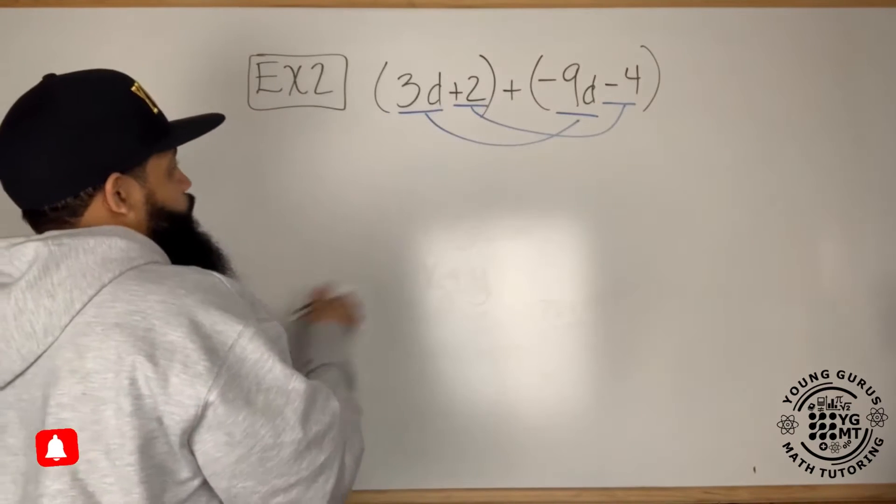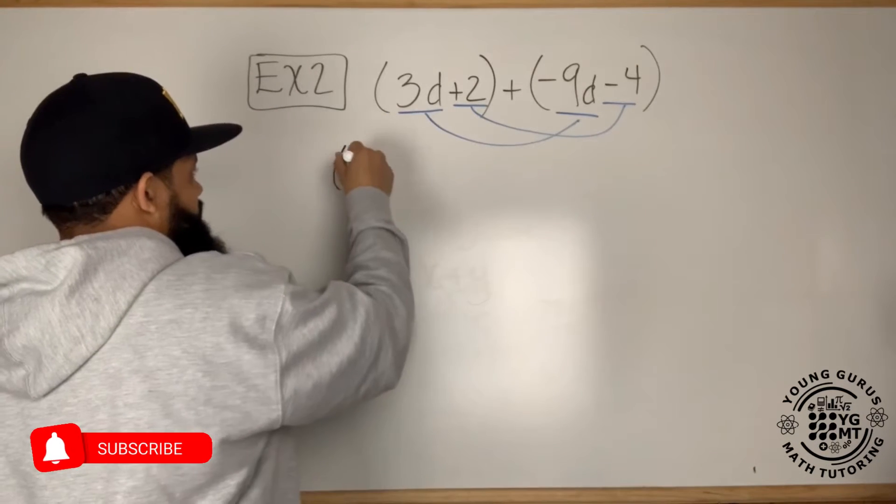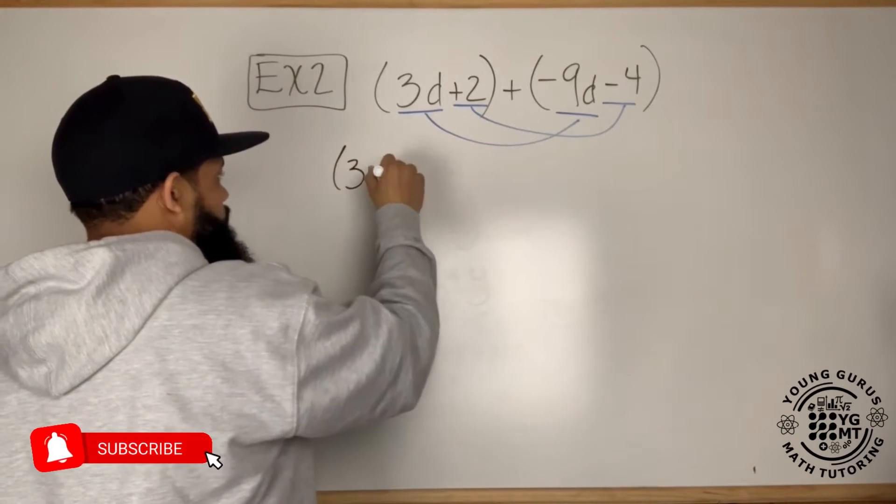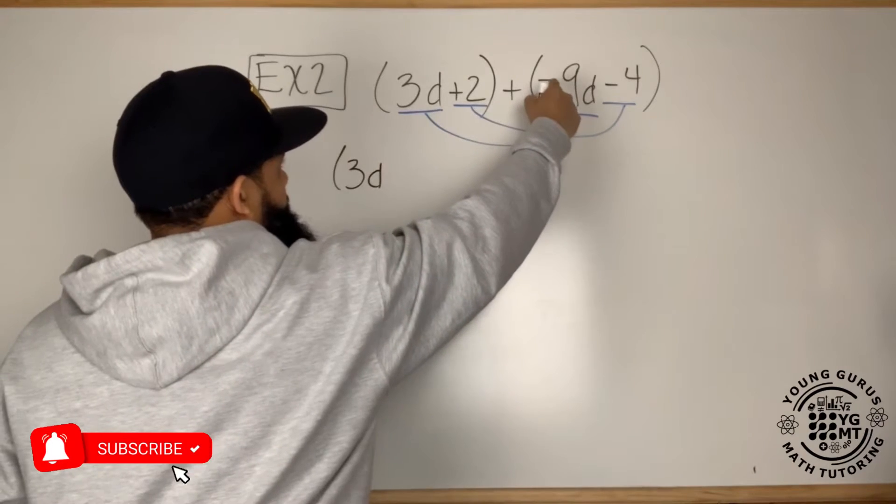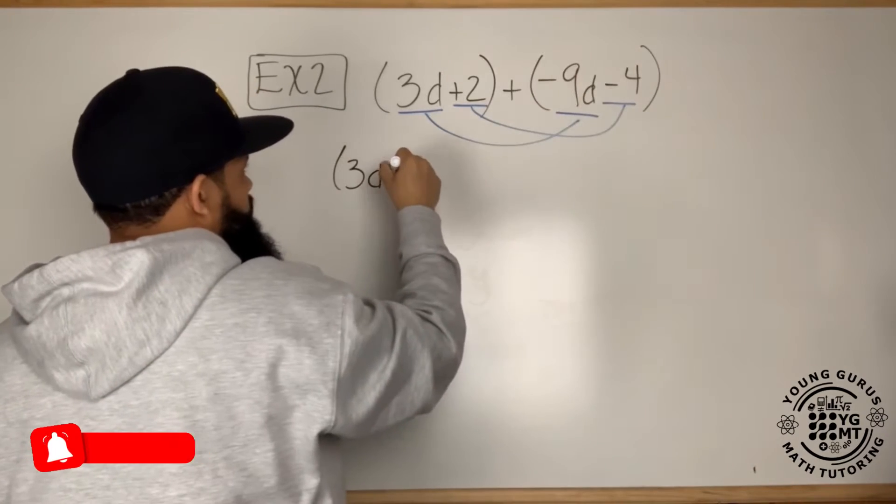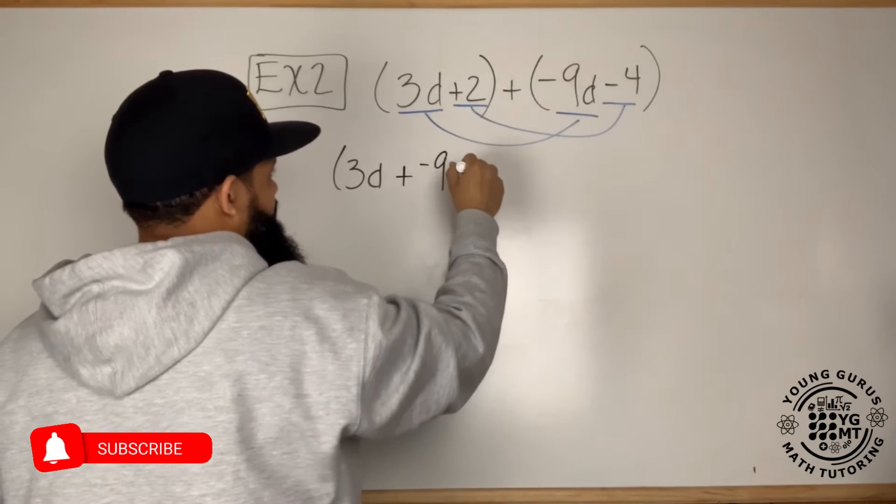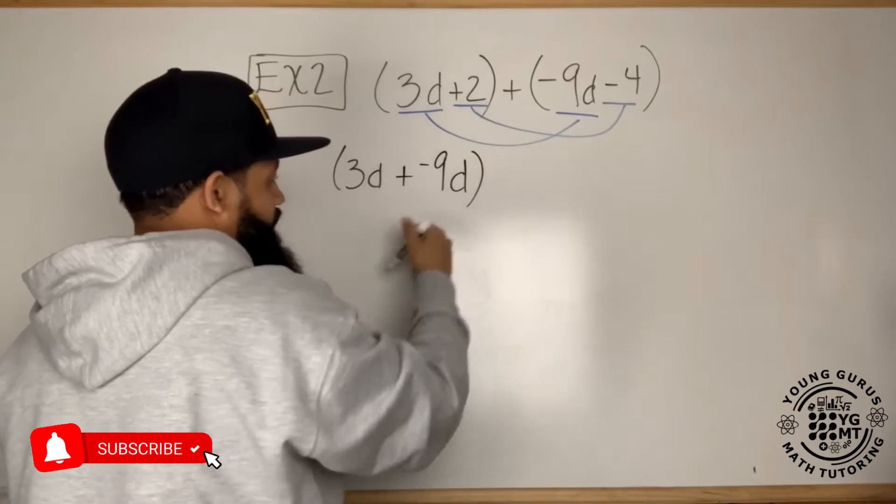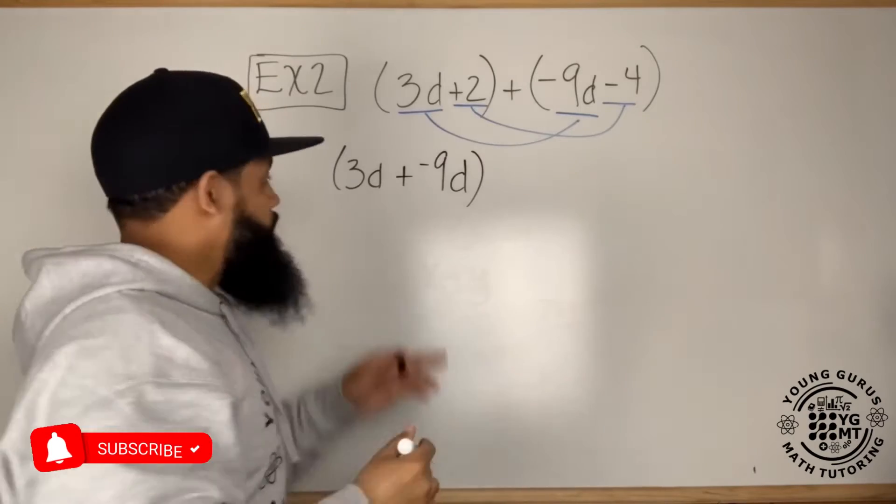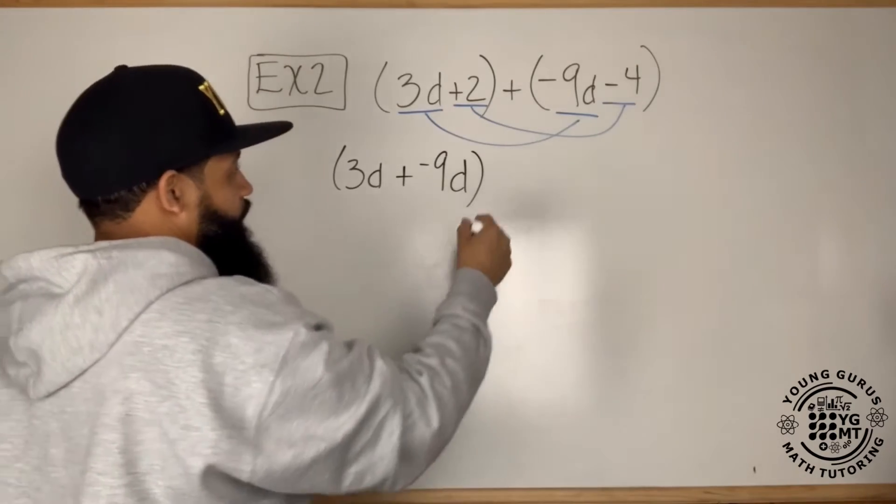So really what I can do is I can simply say 3d minus 9d, or we can look at it like this, plus negative 9d. Same thing, that's also 3d minus 9d, these are the same thing.